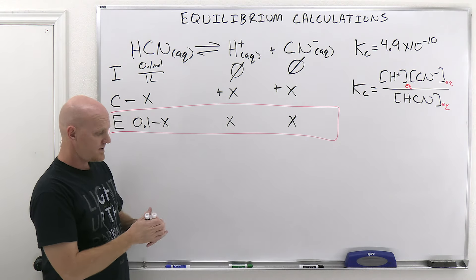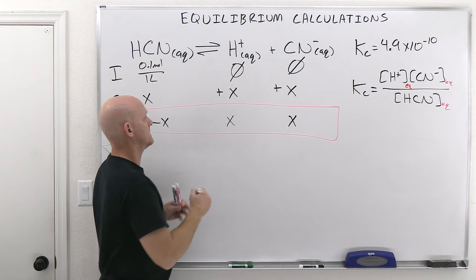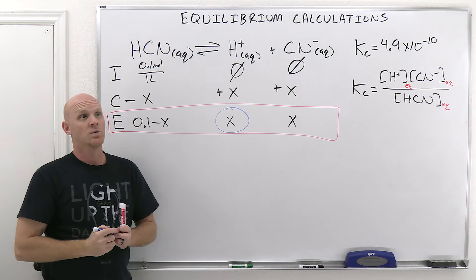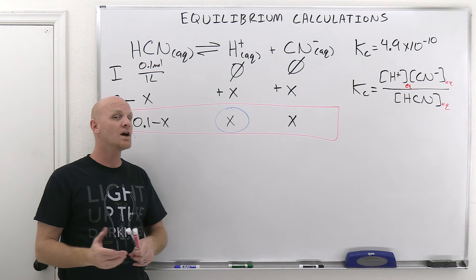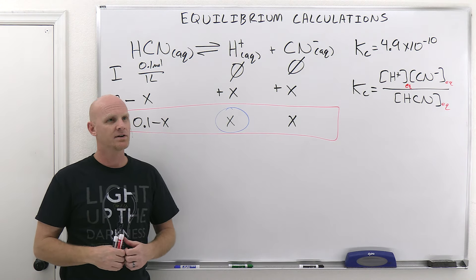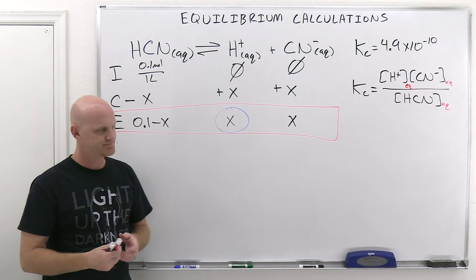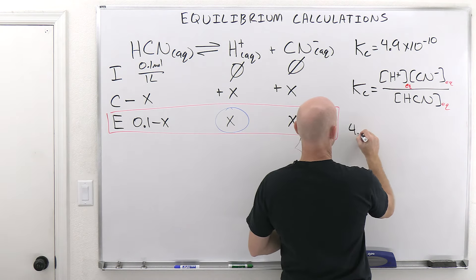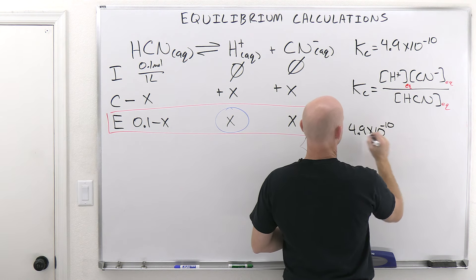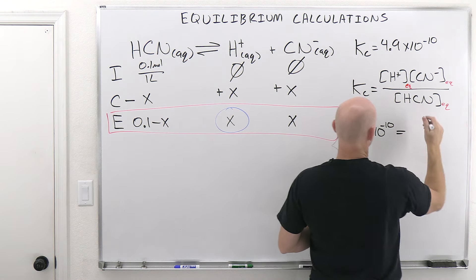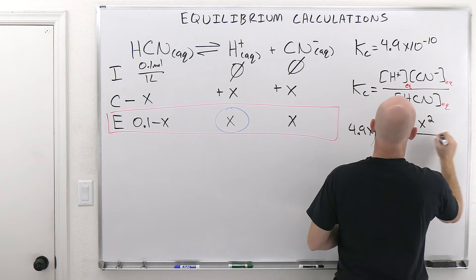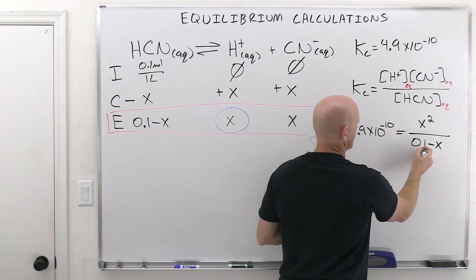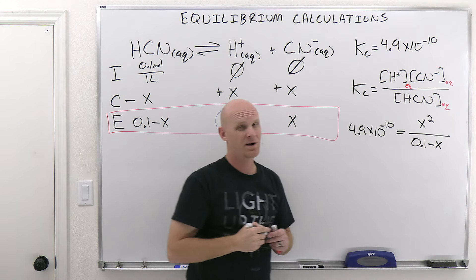On the reactant side, our change is going to be negative — those are going to get used up — but we'll be producing some products, so their changes are going to be positive. With a one-to-one-to-one ratio, it's just simply X's: minus X, plus X, plus X. So 0.1 molar plus a negative X is simply 0.1 minus X for the equilibrium value, and 0 plus X is just X for H+ and CN minus. We're ultimately looking for the equilibrium concentration of H+, which just happens to be X.